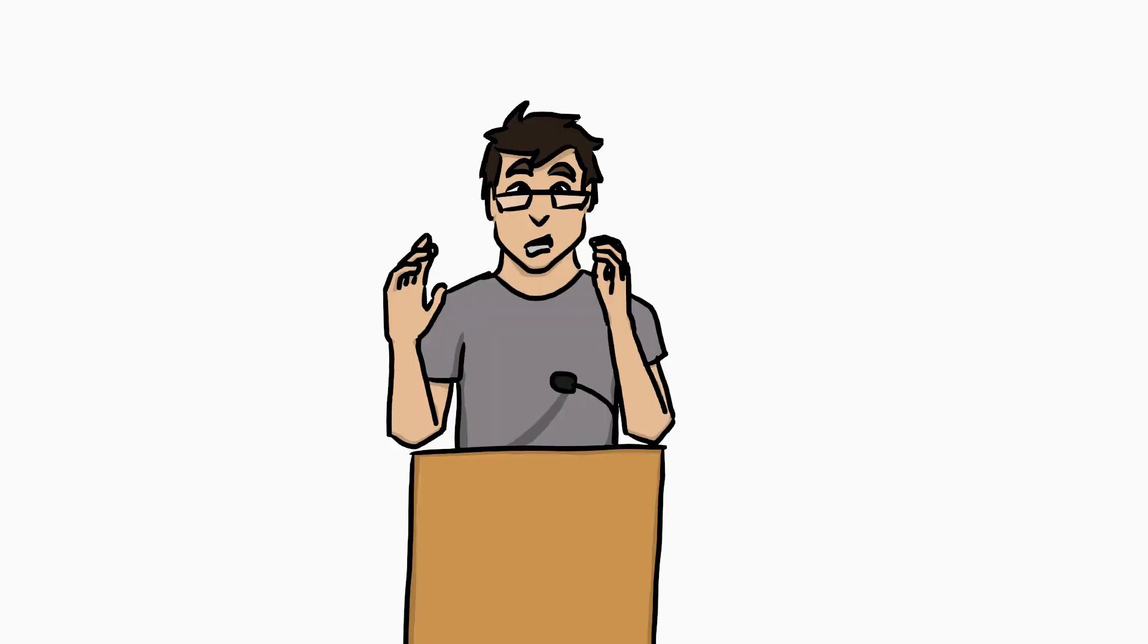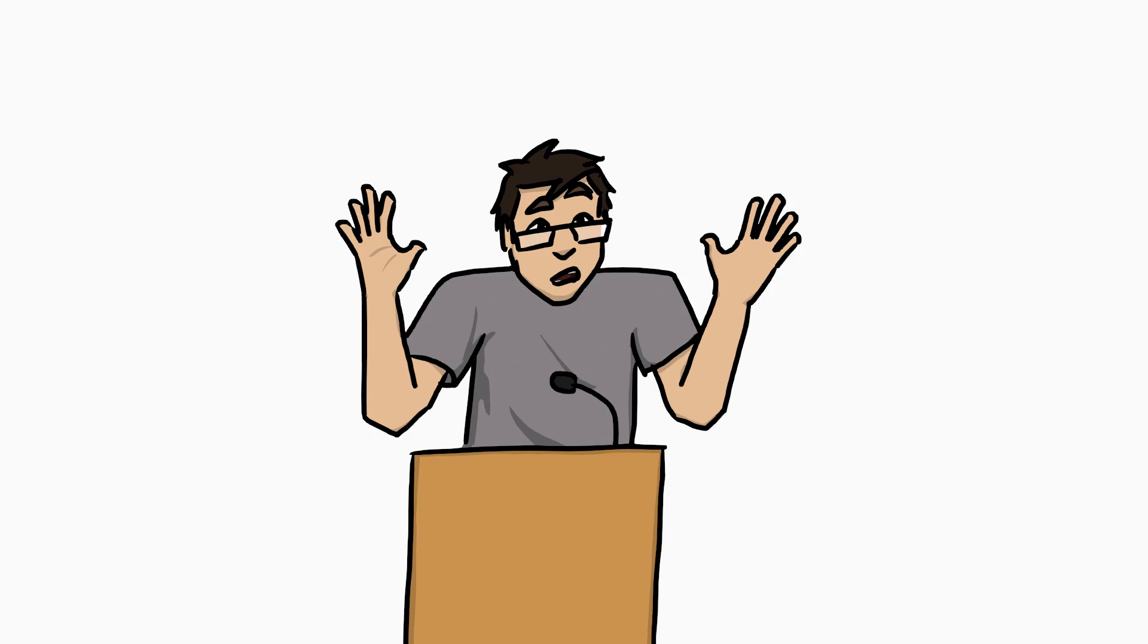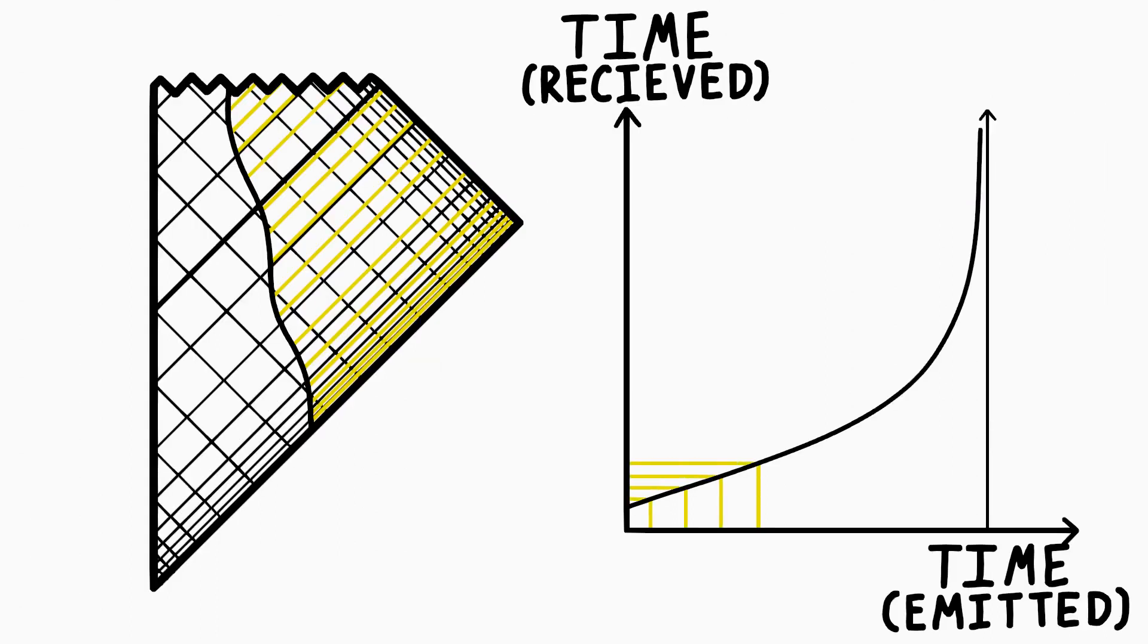When you see something falling into a black hole, what you see is reflected light. This light travels at, well, it travels at the speed of light. And the path it takes is along these lines here. So you can see, that light emitted closer and closer to the event horizon takes longer and longer to escape, until that last photon emitted at exactly the event horizon takes forever to exit.